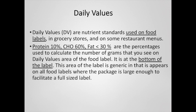The daily value is a nutrient standard used on food labels in grocery stores and on restaurant menus which attempts to summarize all the science done to determine how much of each nutrient we need. We've generally discovered that almost everybody needs a diet composed of approximately 10% protein, 60% carbohydrates, and 30% or less fat. These percentages are used to calculate the number of grams shown on the bottom of the nutrition facts label and the percentages listed along the right side.